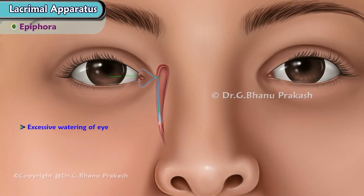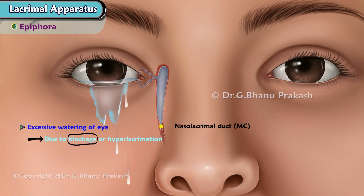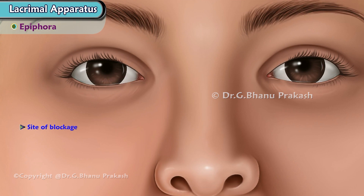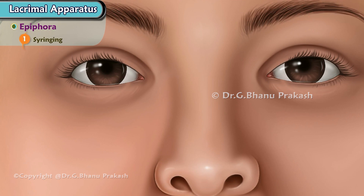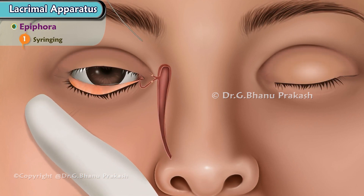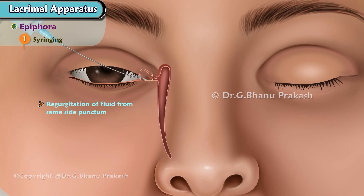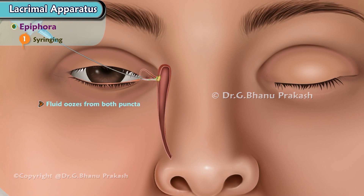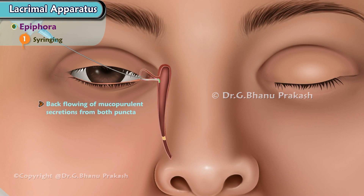Epiphora is excessive watering of the eye due to blockage or hyperlacrimation, more commonly due to blockage at the nasolacrimal duct, most commonly at the canaliculi. Site of blockage is determined by syringing with water or probing. 1. Syringing: Regurgitation of fluid from the same-side punctum denotes lower or upper canaliculi block. If fluid oozes from both puncta, it denotes common canalicular block. When there is backflow of mucopurulent secretions from both puncta, it suggests nasolacrimal duct block.